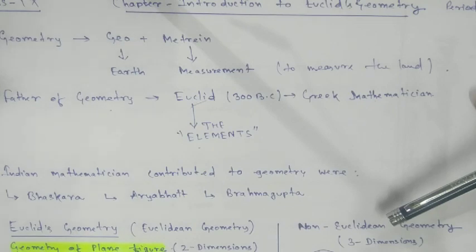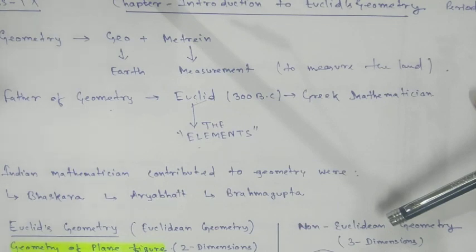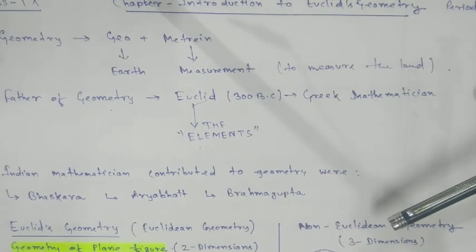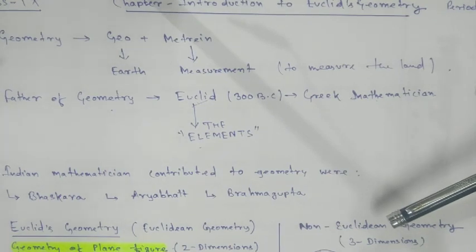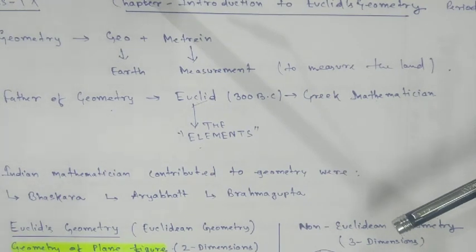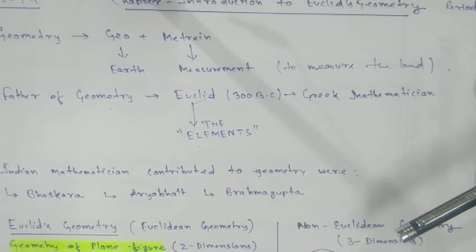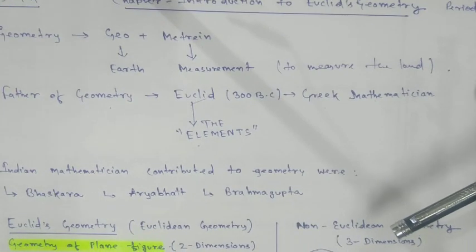Who is the father of geometry? Euclid. He was a Greek mathematician. He has written a book called 'The Elements'. There are 13 volumes in it, and whatever we are going to study in class 9 and 10 — that is Euclidean geometry.